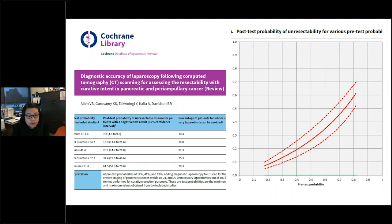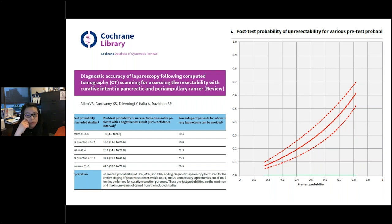If there is a low pretest probability — the minimum shown is 17% — the post-test probability falls to 7%, a significant decrease. That benefit is even greater if pretest probability is higher. The authors also concluded that complications related to diagnostic laparoscopy were exceedingly low, less than 0.2% in the studies they observed.